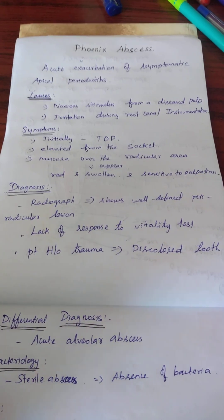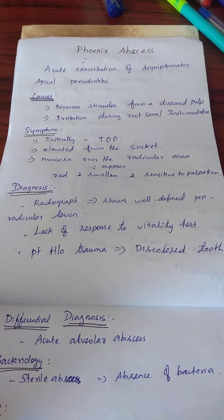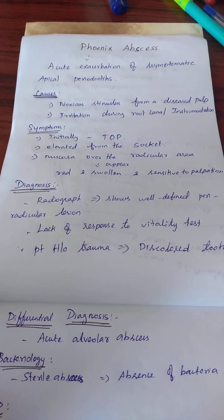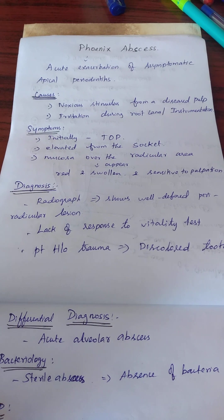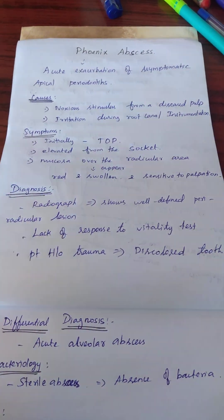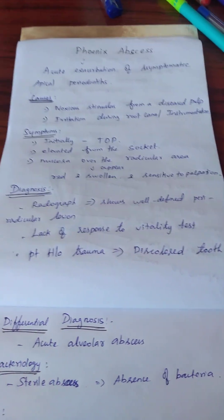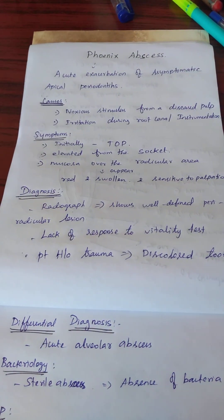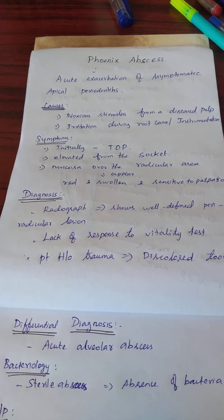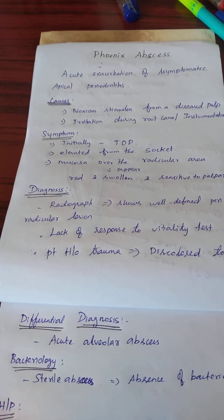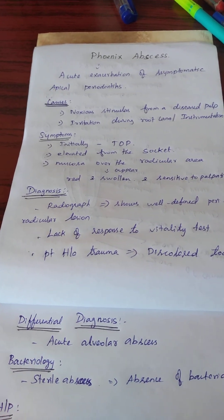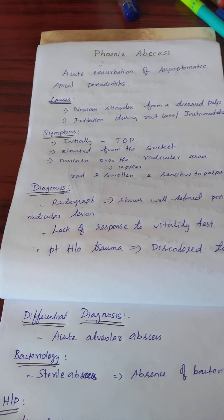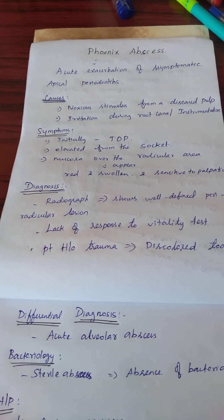Phoenix abscess, also known as acute exacerbation of asymptomatic apical periodontitis. This condition is an acute inflammatory reaction superimposed on an existing asymptomatic apical periodontitis.